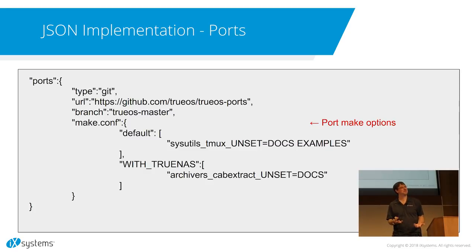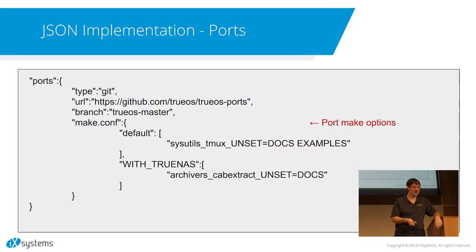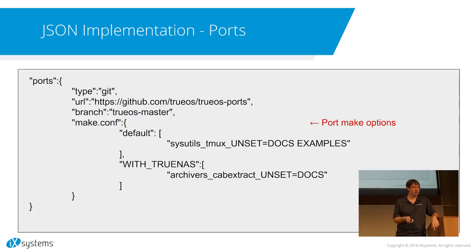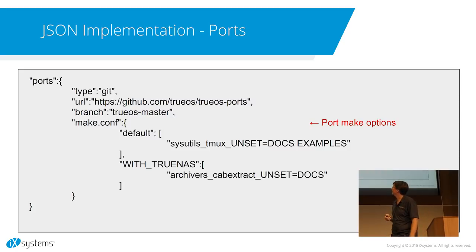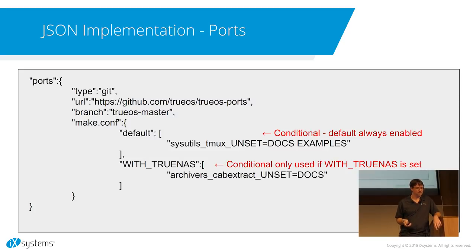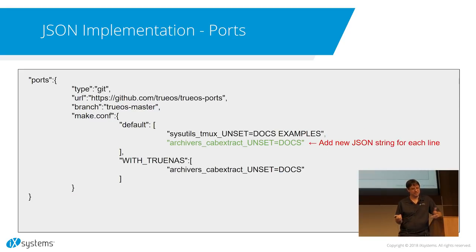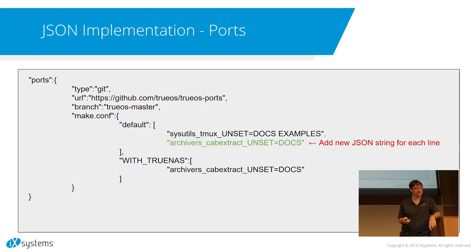Everybody when they build ports seems to have different flags too. FreeNAS has 50 or 60 different flags set on a variety of ports — changing defaults like getting rid of docs or example files, or turning on features in Samba that maybe default FreeBSD doesn't use. So we're able to provide a make.conf schema in the JSON and say here's our default settings, but with TrueNAS maybe we have a different set. Adding new ones is easy — you're just adding new lines. The syntax is straightforward and clean.